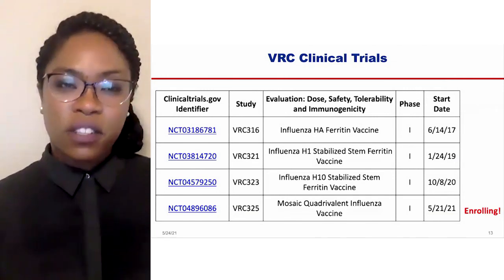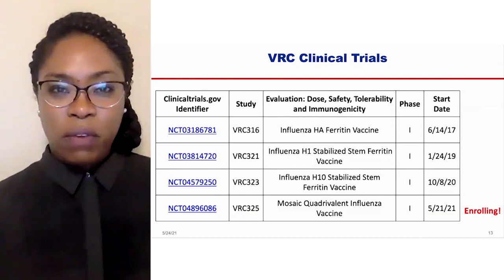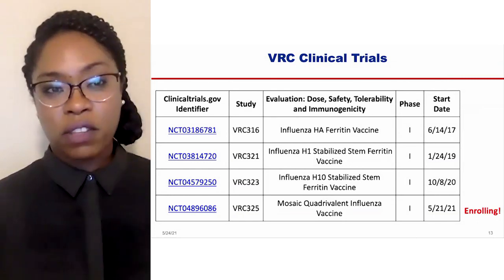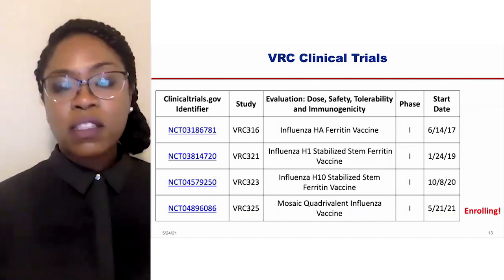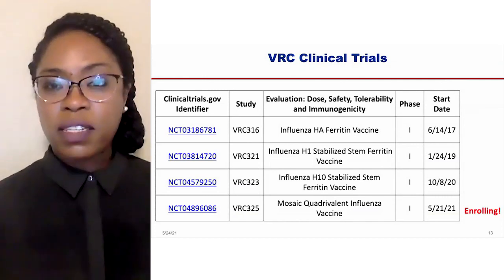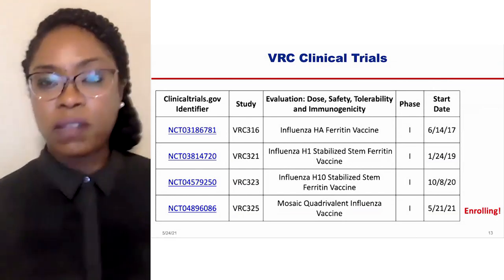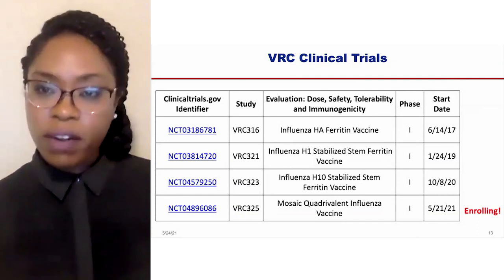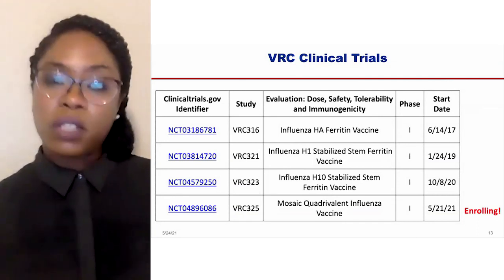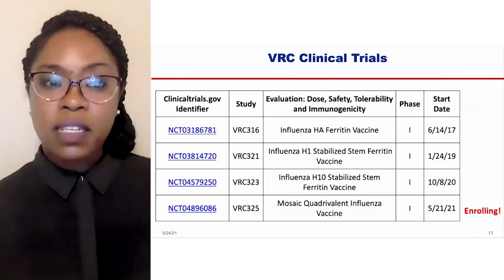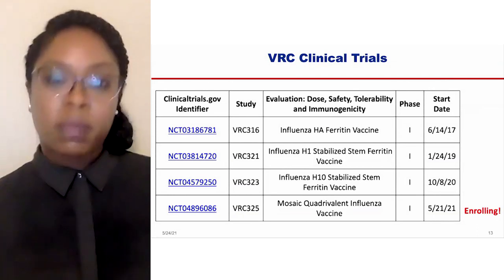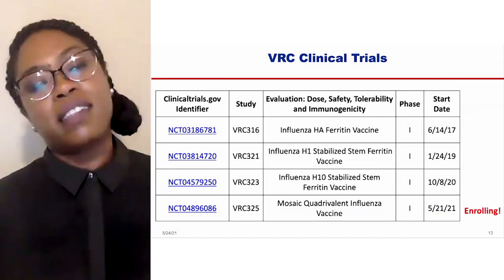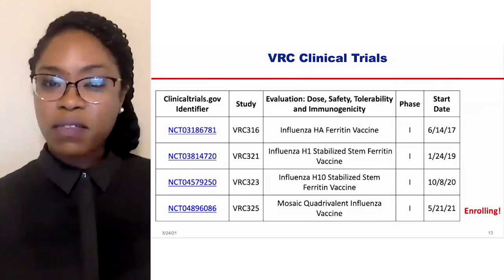This body of work that started in 2008 only went into first-in-human clinical trials in 2017 — almost 10 years after the first scientific discoveries. We started by displaying hemagglutinin on the surface of a ferritin nanoparticle in 2017 for that first-in-human trial. We then did a specific H1 hemagglutinin molecule on ferritin in 2019, then an H10 hemagglutinin molecule in 2020. We are currently enrolling participants for the mosaic nanoparticle covered in this talk. With that, I'd like to say thank you for listening — I hope it was informative and I wish you the best for the summer and the rest of the year.